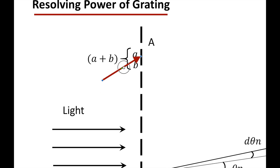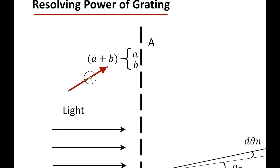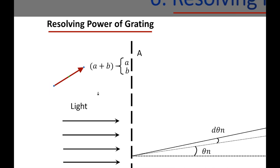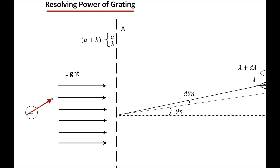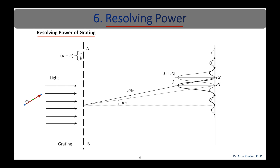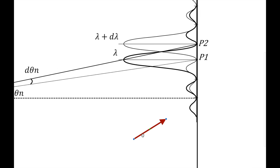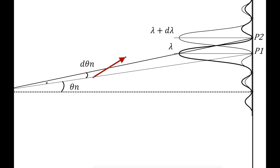Here, small a is the length of the opaque area and small b is the length of the slit. So the distance (a + b) is called the grating element of that grating. Now let us consider a beam of light having two wavelengths lambda and lambda plus d lambda normally incident on the grating. P1 is the nth primary maximum of the spectral line of wavelength lambda at a diffraction angle theta, and P2 is the nth primary maximum of wavelength lambda plus d lambda at diffracting angle theta plus d theta.